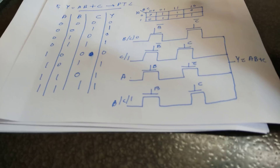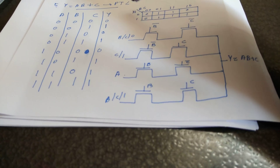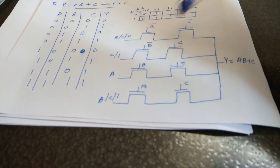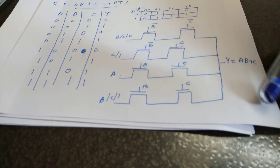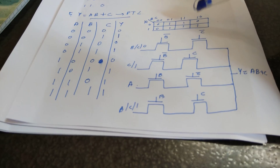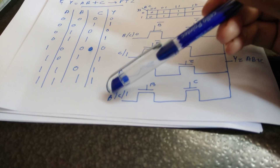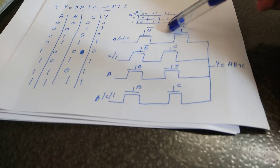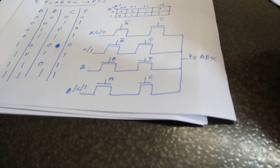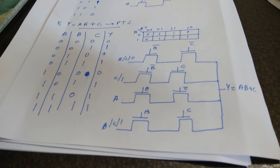When BC is 11, we see that B and C are both 1 and the output obtained is also 1, so we can write the input as either B or C or 1. Combining all four combinations you can obtain Y equal to AB plus C using PTL. In the next video I will be covering the other two logics — CPL and TGL. Thank you.